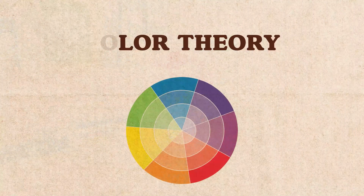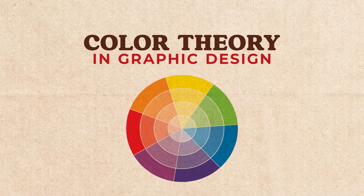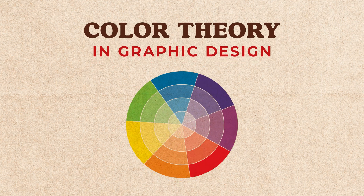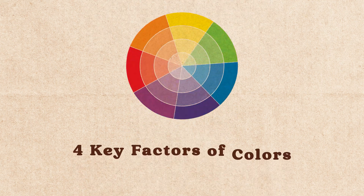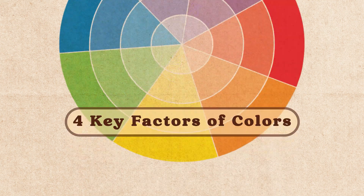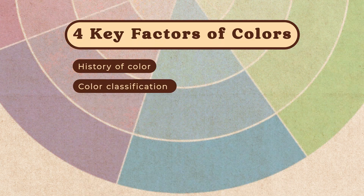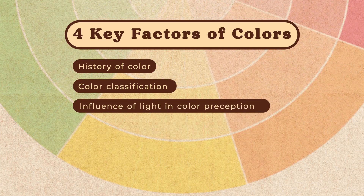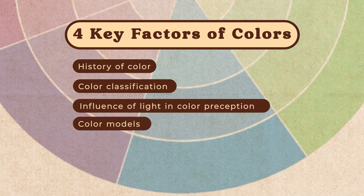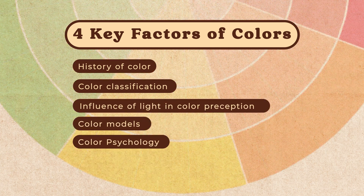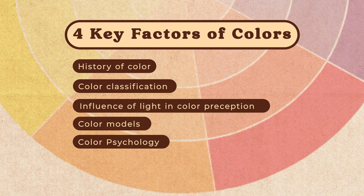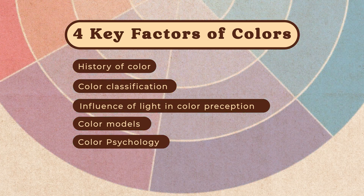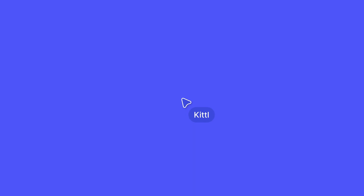Welcome to Kittle's first major lesson on color theory in graphic design. In this video we're going to be talking about four key factors of color: the history of color, color classification along with how light impacts color perception, color models, and lastly color psychology. There's quite a bit to get into here, so feel free to grab a cup of coffee or tea and whatever you want to take notes with, and we will get rolling.